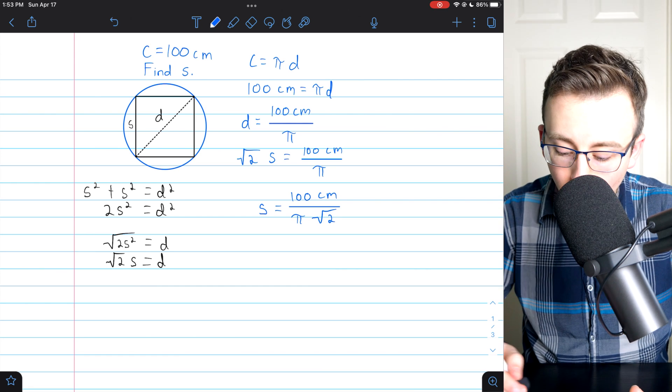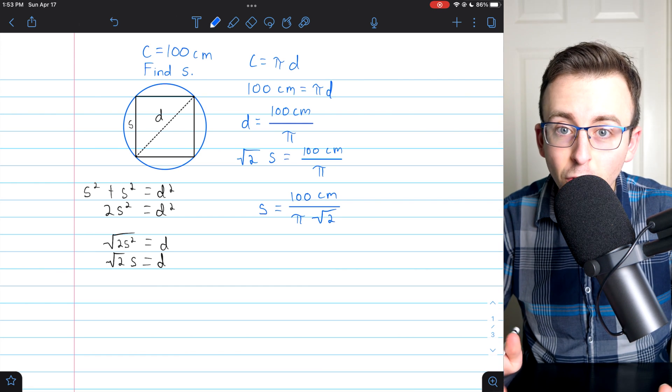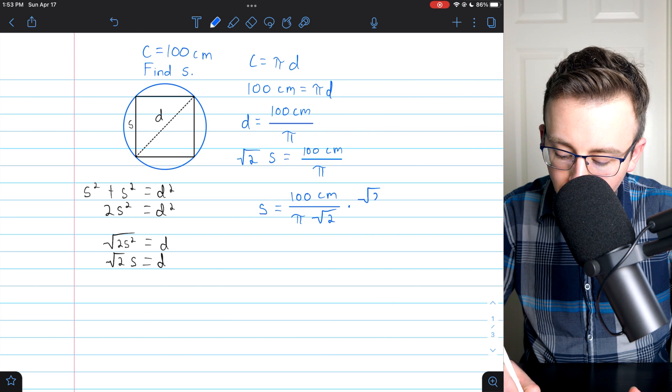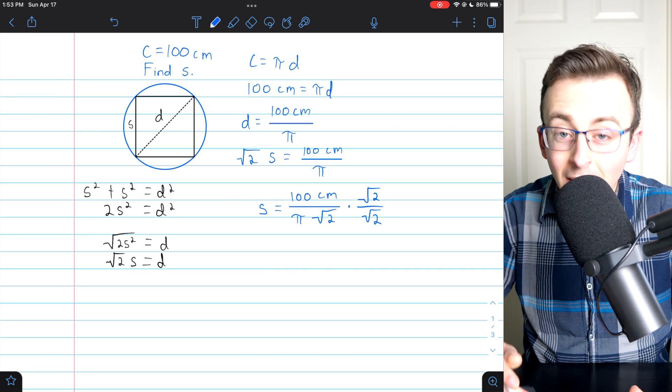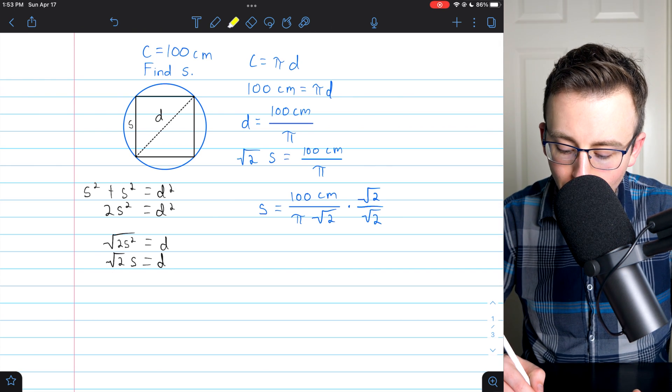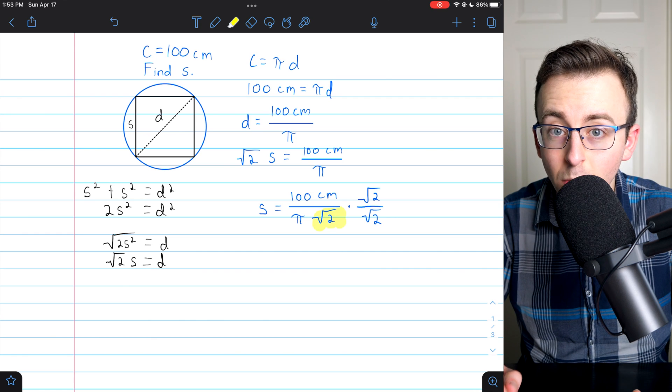Now all that remains is to rationalize the denominator. And to do that, we'll multiply by square root of 2 over square root of 2. This isn't a necessary step. It just makes our answer look nicer by getting rid of the square root in the denominator.